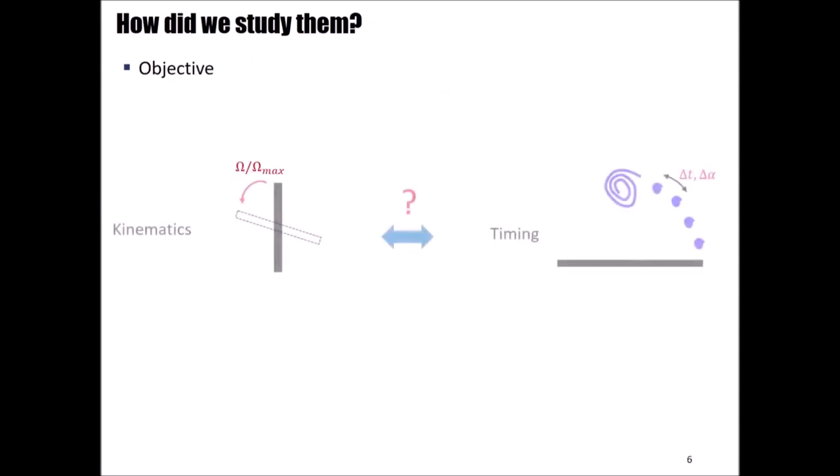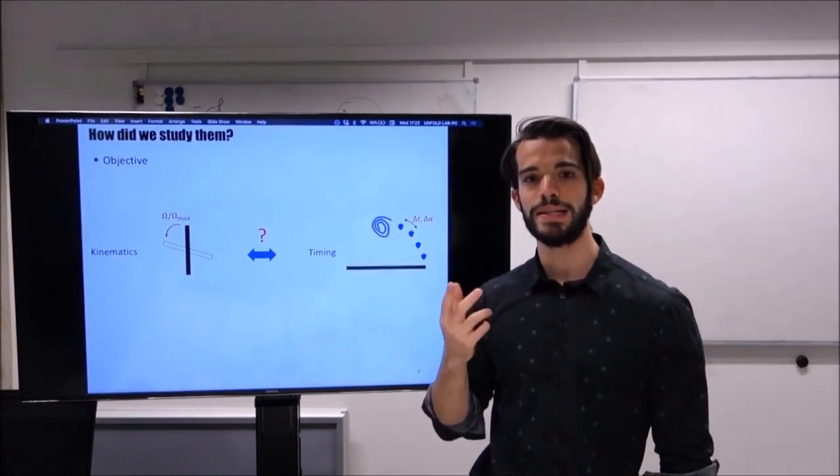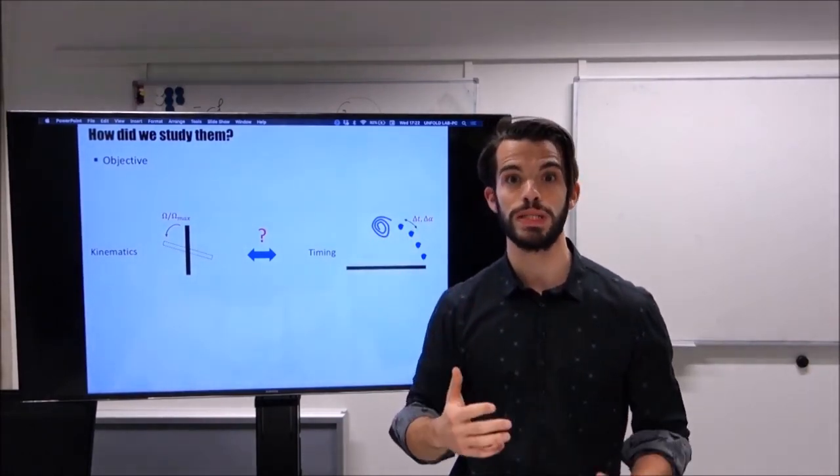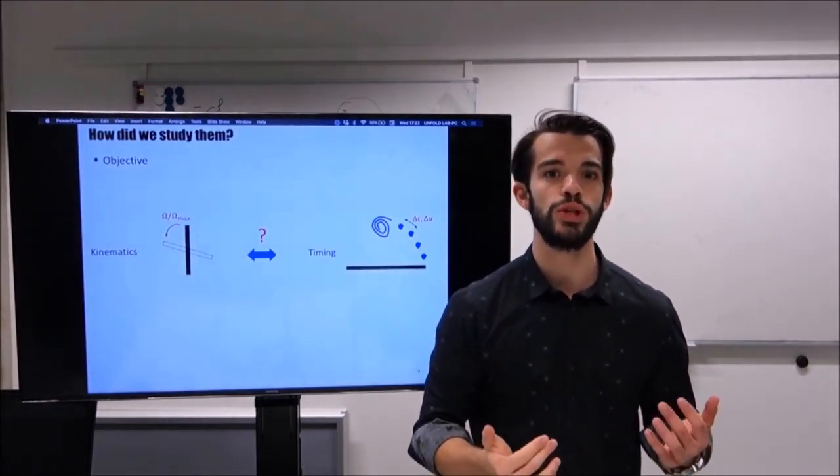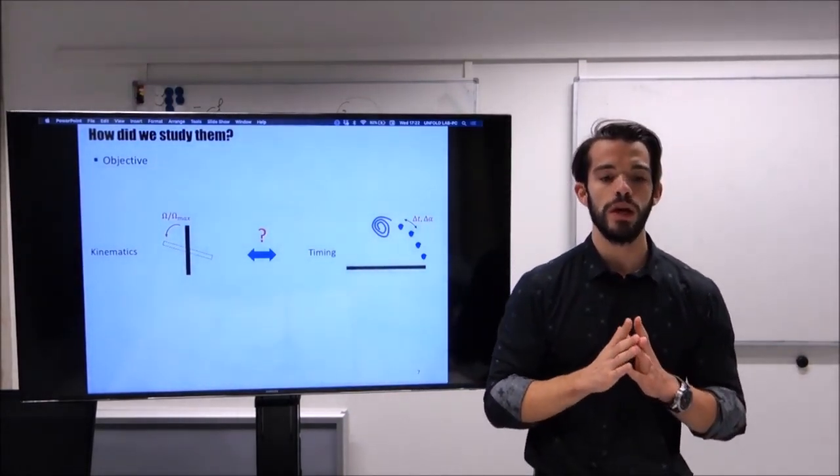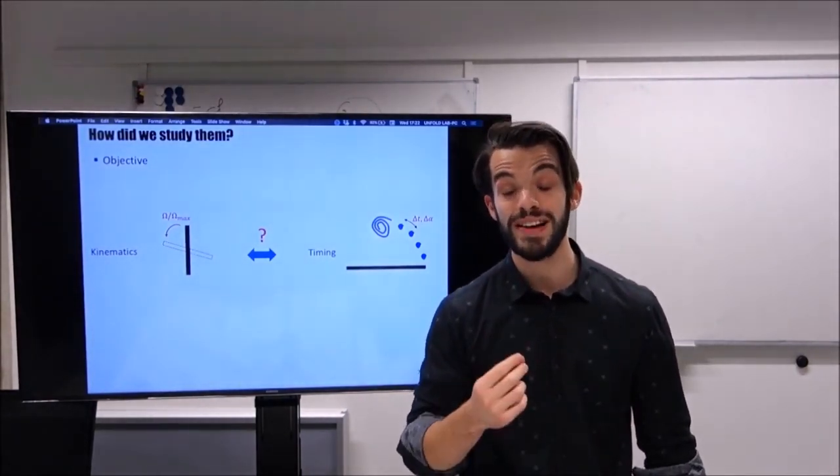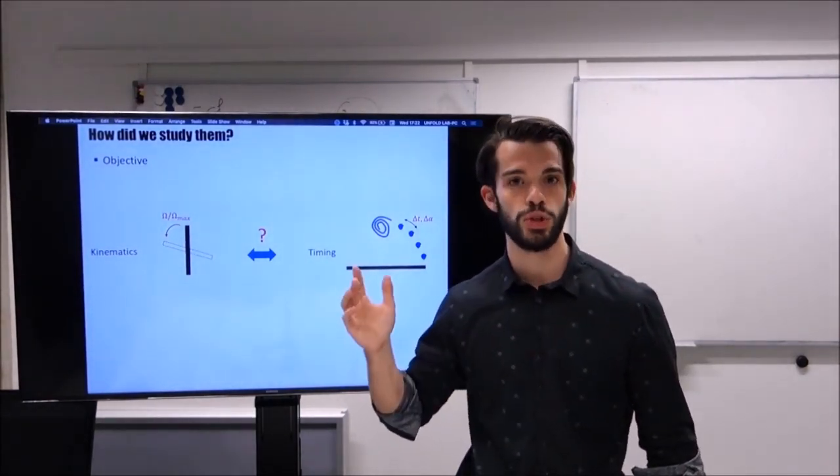The objective of this experimental campaign is to comprehend how the kinematics, more precisely the maximum achieved speed of the rotating plate, influence the timing at which secondary vortices are shed. Now that the objective is set, you may ask if secondary vortices always appear or there are conditions under which they don't appear. And to answer this question, I want to first show you what happens to the flow topology if we progressively increase the rotational speed.